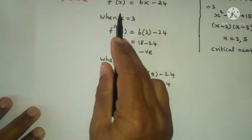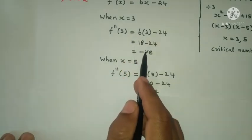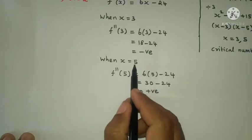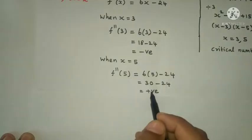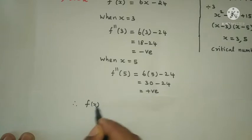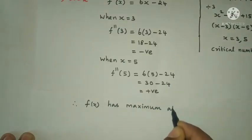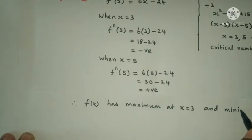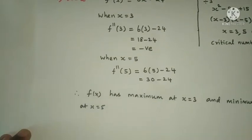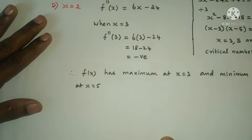Since f''(3) is negative, f(x) has a maximum at x equals 3. Since f''(5) is positive, f(x) has a minimum at x equals 5.